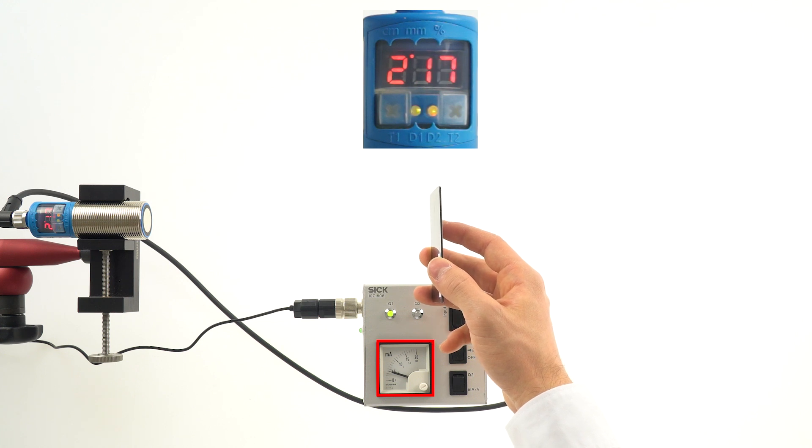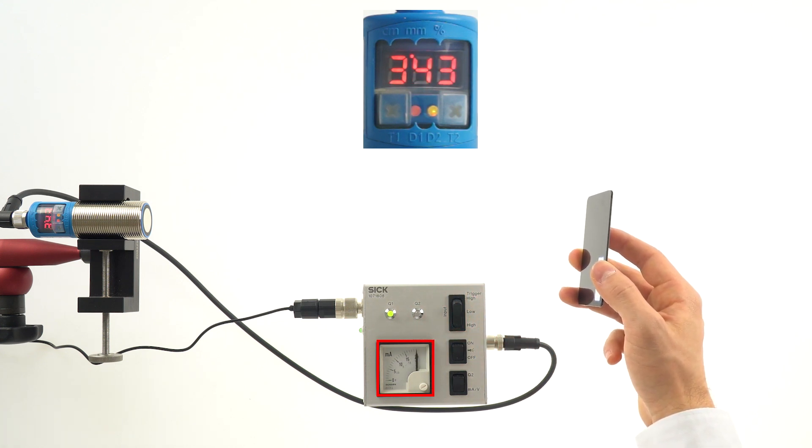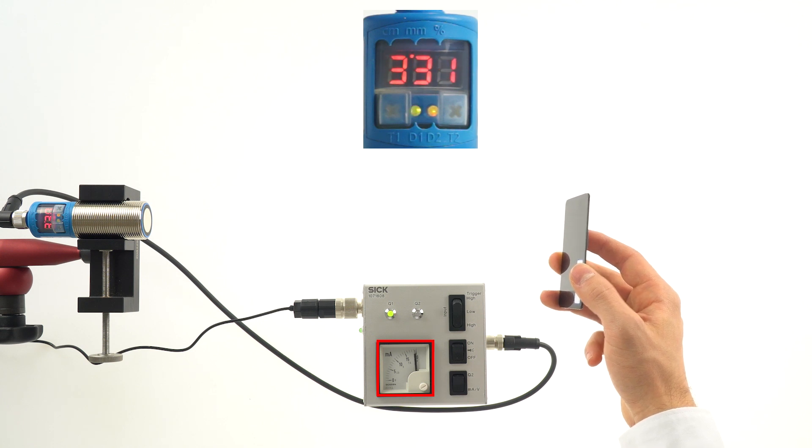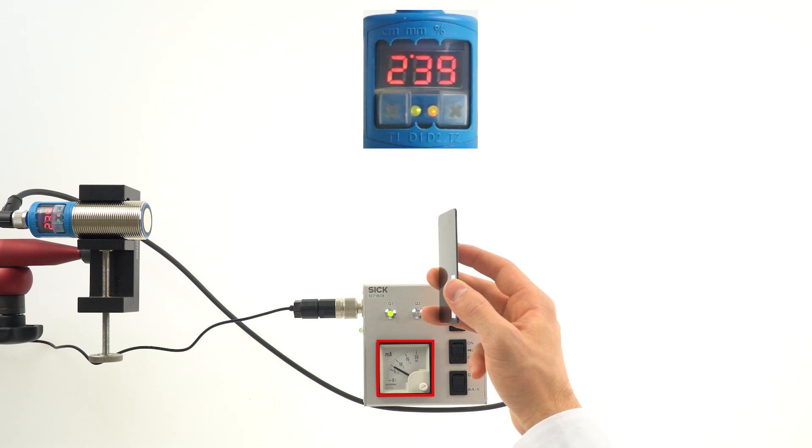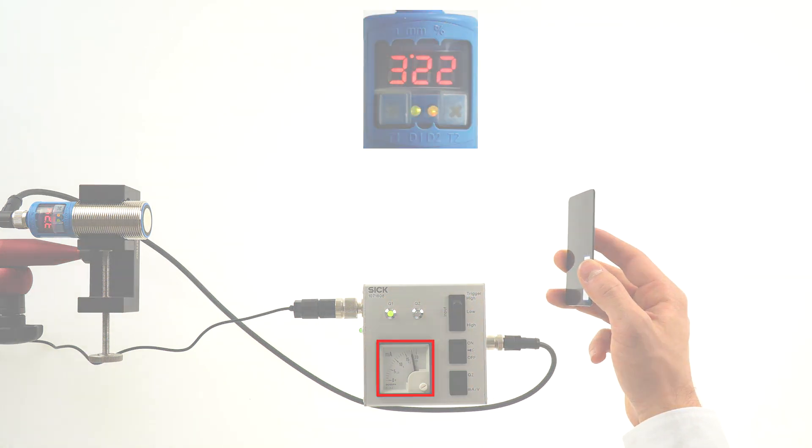The parametrization of the analog output is not only possible via teaching, it can also be parameterized manually. Before we show you how to do the parametrization manually, please reset the UM30-2.